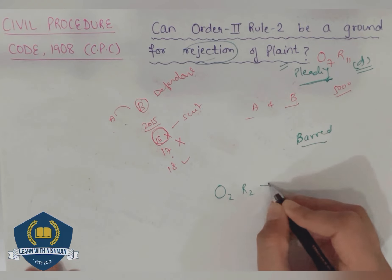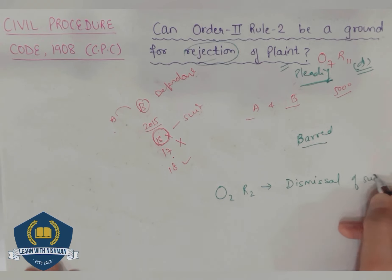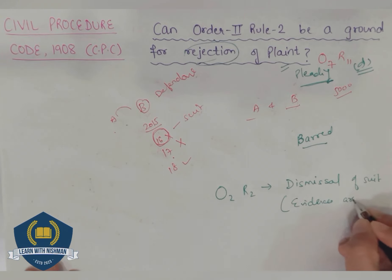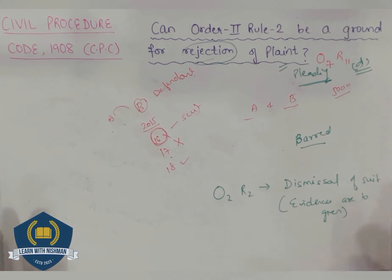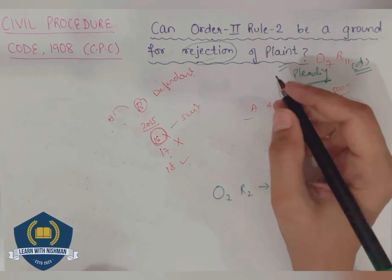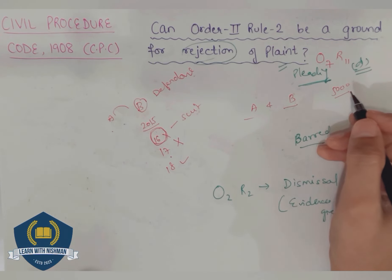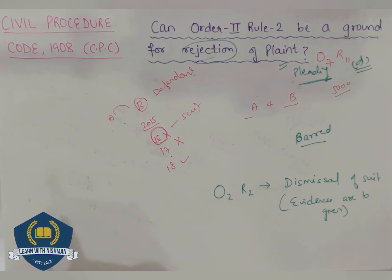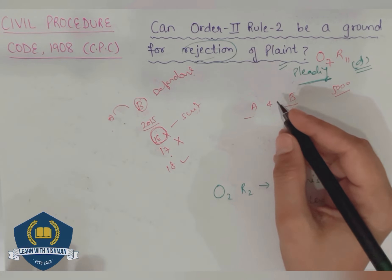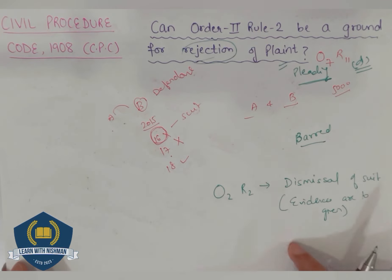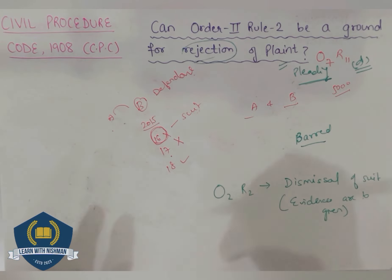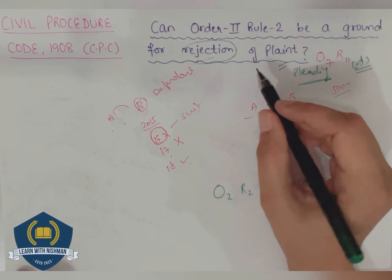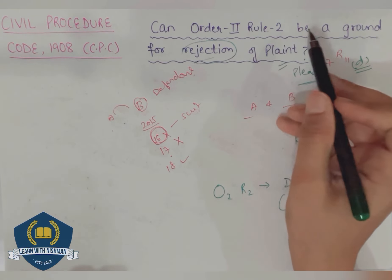Order 2 Rule 2 always leads to dismissal of suit, not rejection of plaint. For rejection of plaint under Order 7 Rule 11 clause (d), it is essential that the bar shall appear from the pleadings of the plaint itself — not on the basis of evidences proved. If evidences are required to be proved, the suit may be dismissed, but the plaint cannot be rejected, as in the case of Order 2 Rule 2. The bar cannot be proved merely on the basis of the plaint of the subsequent suit; it can be proved only by producing evidences and documents of the previous suit. Therefore, on the ground of Order 2 Rule 2, the plaint cannot be rejected.